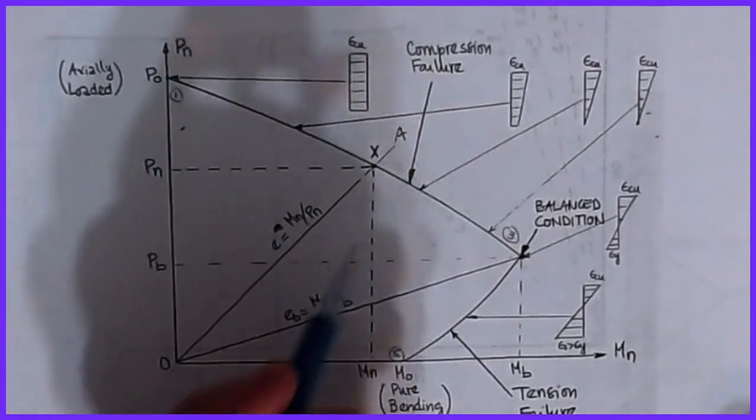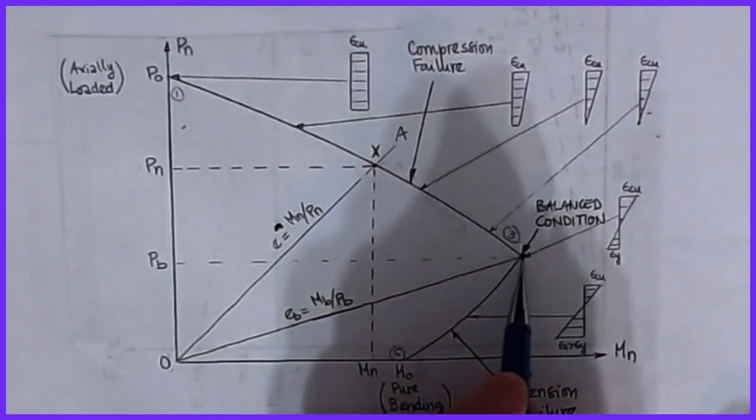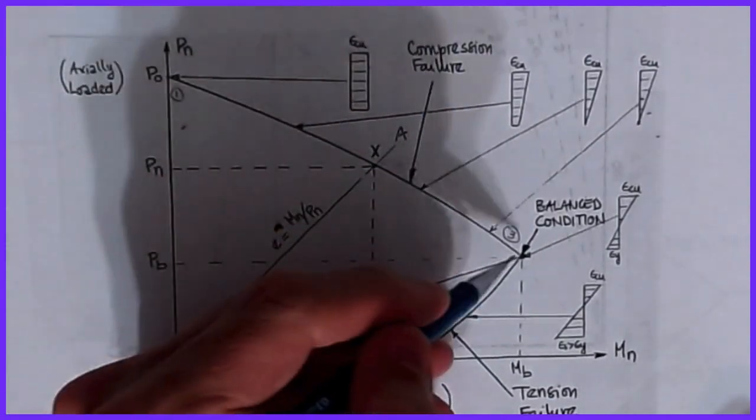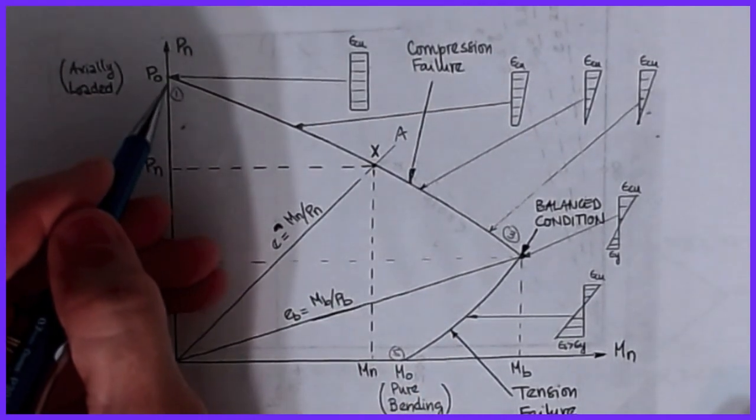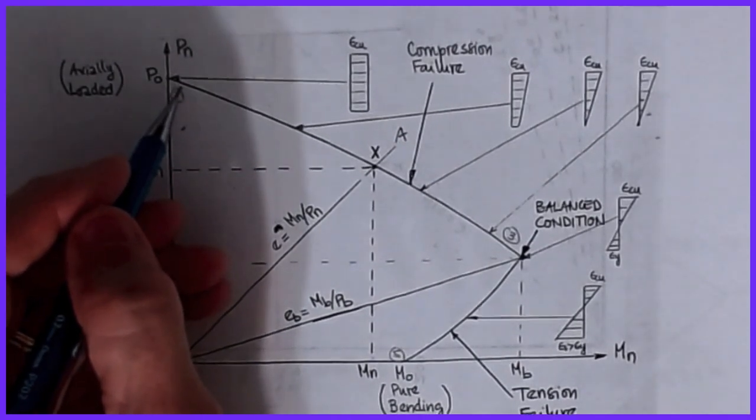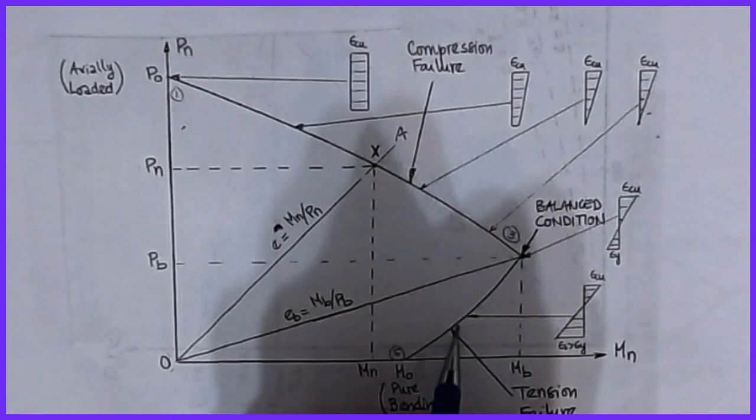On this line, this indicates that it's a compression failure, that we're not yielding the steel. It becomes more of an axial compression type member. Down here is more of a flexural member in which the steel yields.